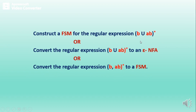Now, B union AB whole star contains the basic alphabets B and A. So first we will construct FSM for B and A individually. Later we will enlarge them to add concatenation, union, and Kleene star.